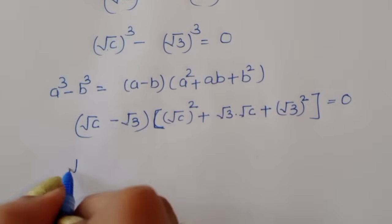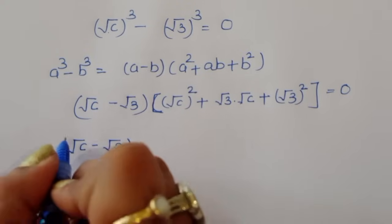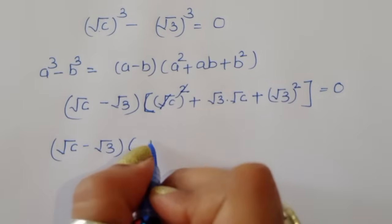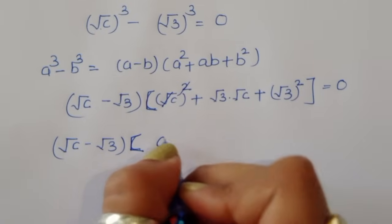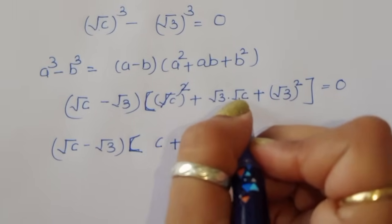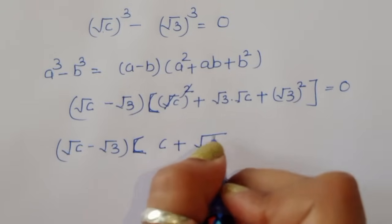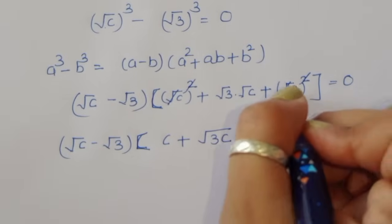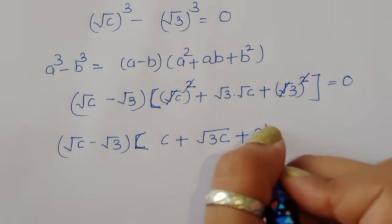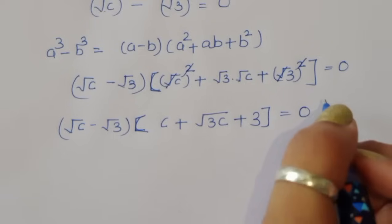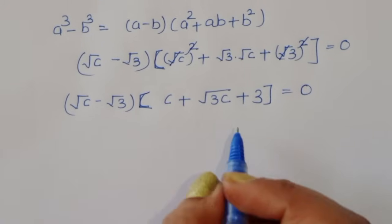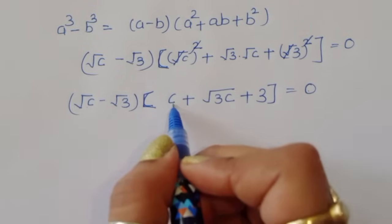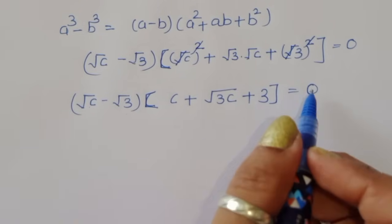Simplifying: square root of c minus square root of 3, times the quantity c plus square root of 3c plus 3 equals 0. The squares cancel with the square roots, giving us c plus √(3c) plus 3 equals 0 for the second factor.